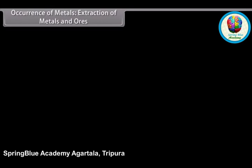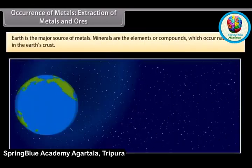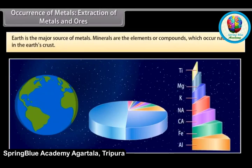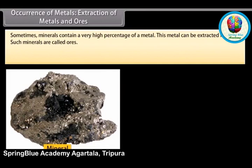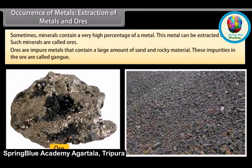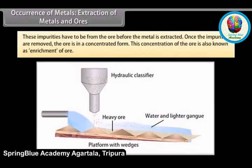Occurrence of metals — Extraction of metals and ores. Earth is the major source of metals; however, seawater also contains some soluble salts. Minerals are elements or compounds which occur naturally in the earth's crust. Sometimes minerals contain a very high percentage of a metal that can be extracted — such minerals are called ores. Ores are impure and contain a large amount of sand and rocky material called gangue, which must be removed before the metal is extracted. Once impurities are removed, the ore is in a concentrated form, also known as enrichment of ore.